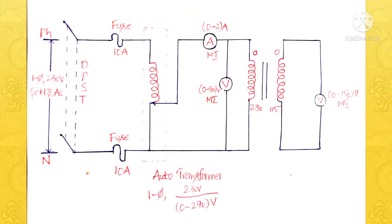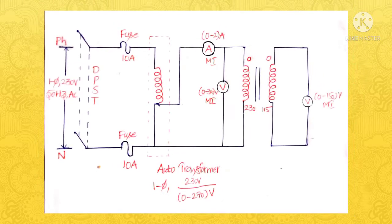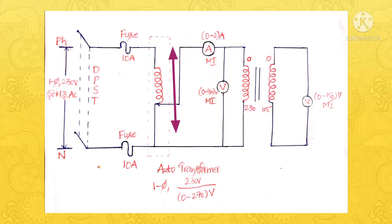This experiment is conducted in two steps. In the first step, we will connect the circuit as shown in the diagram. Here we have an autotransformer as well as a transformer. As the first step of the experiment, by keeping the autotransformer in the minimum position, we will close the DPST switch. After closing this, by varying the autotransformer, we can vary the voltage supplied to the primary, the voltage supplied to the secondary, as well as the current drawn by the primary. We will note down all these parameters.